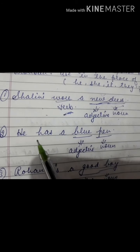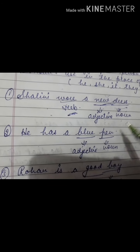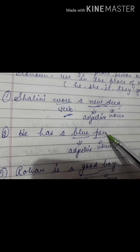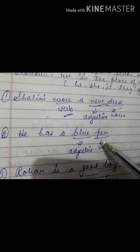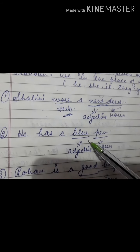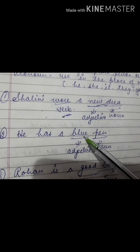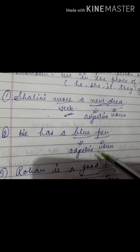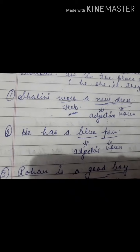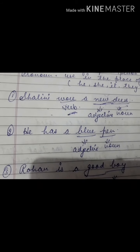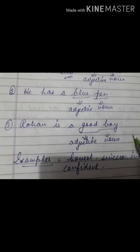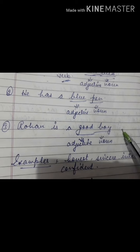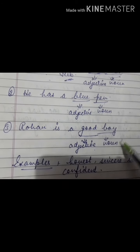Take another example. He has a blue pen. What is my noun? Pen — because pen is the name of a thing. And which word describes pen? Blue. How is the pen? Blue. So 'blue' is my adjective. Another example: Rohan is a good boy. How is Rohan? Rohan is good. So 'good' is my adjective and 'boy' is noun.